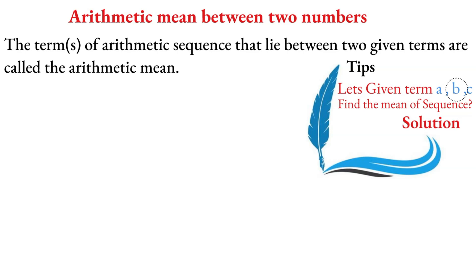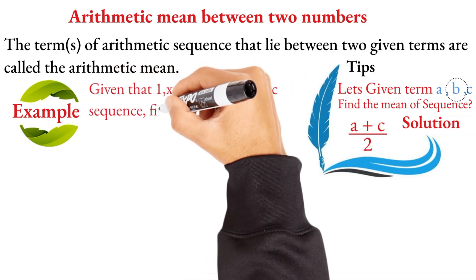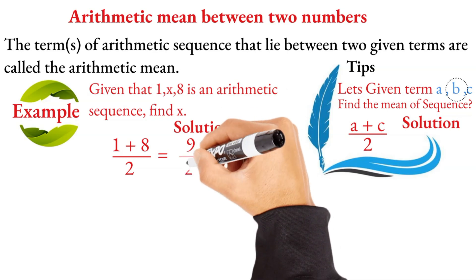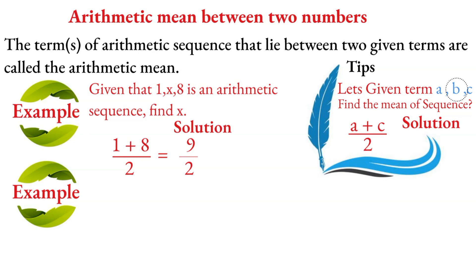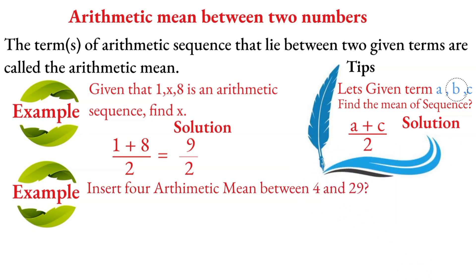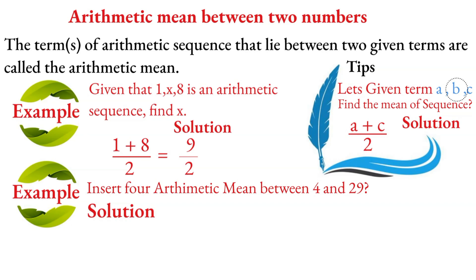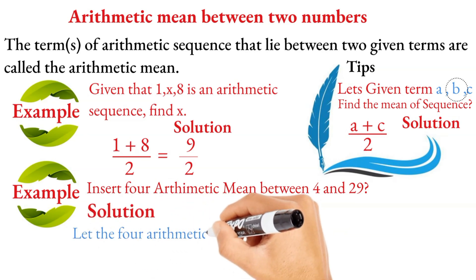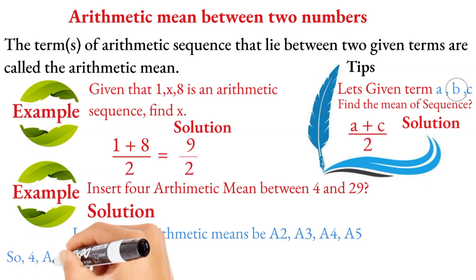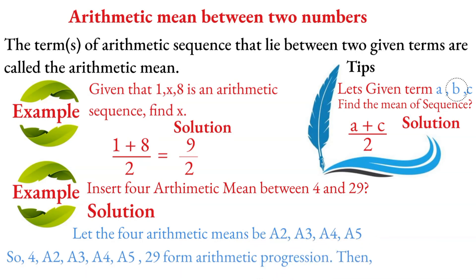Example 1: Find the arithmetic mean between 1 and 8. Here x is equal to 1 plus 8 divided by 2, which equals 9 divided by 2, equals 4.5. Example 2: Insert 4 arithmetic means between 4 and 29. We need to find the common difference for this sequence.